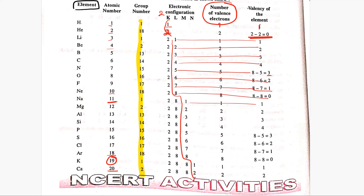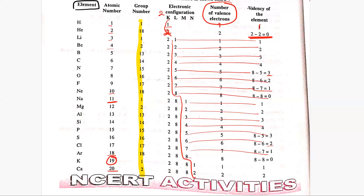Then valencies are: 1, 2, 3, 4. Valency is 3 because 8 minus 5 is 3. Here, 8 minus 6 is 2. Then 1, 0, 1, and 2.